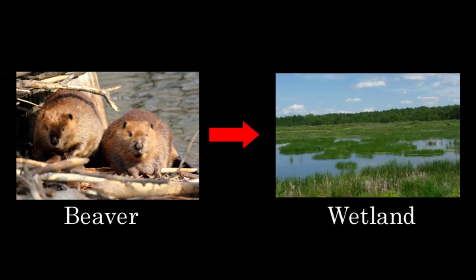It's not only top predators that can be classed as keystone species. Beavers are also a very common example of a keystone species due to their role as ecosystem engineers — in other words, their activities modify the physical environment. Because beavers build dams, they create large areas of new wetland habitat, which introduces many new species within the area and so increases biodiversity.